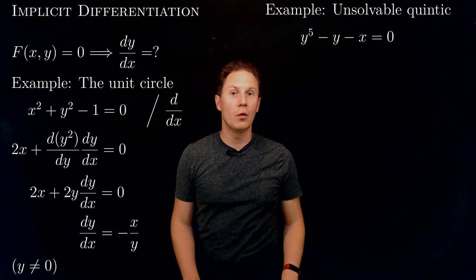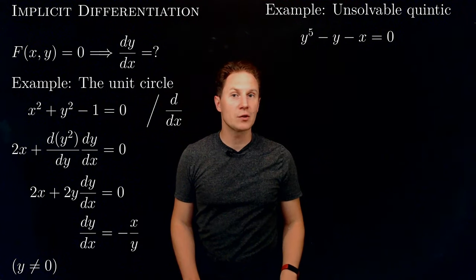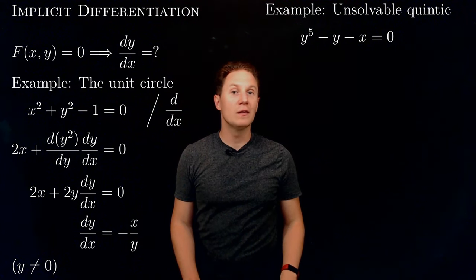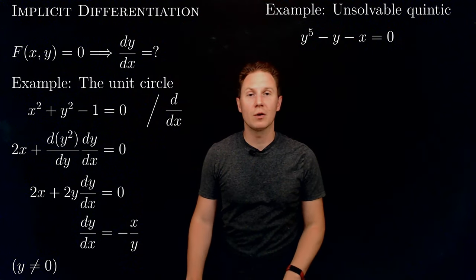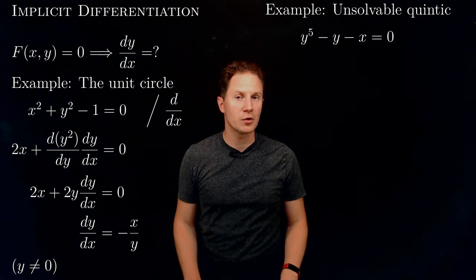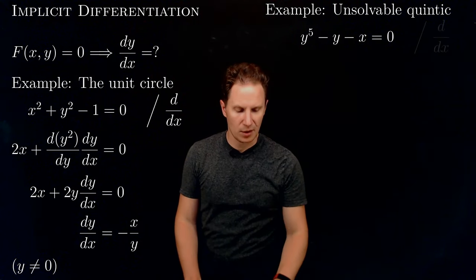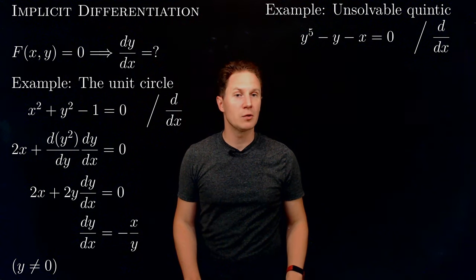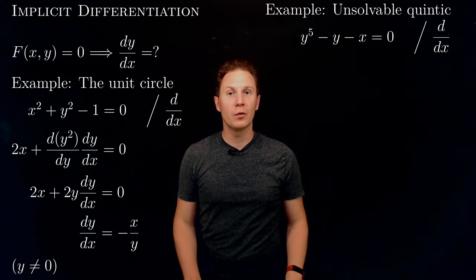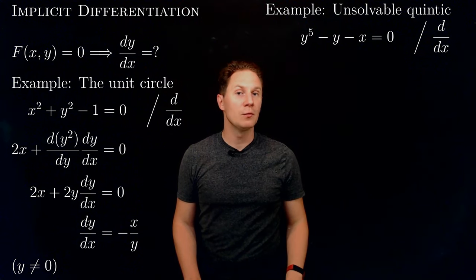There is no solution formula involving roots and the basic arithmetic operations. So it is not possible to solve the equation for y to express it as an explicit function of x. But if we use implicit differentiation — differentiating both sides of the equation with respect to x and equating the derivatives — we can still find dy/dx.